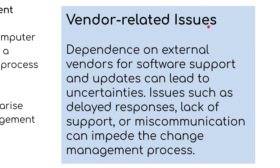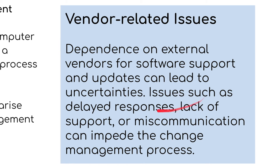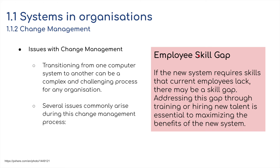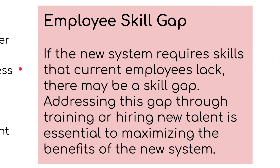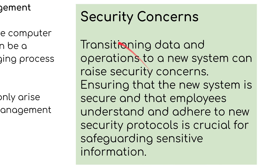Vendor-related issues are another concern — sometimes we depend on external vendors for software support and updates, which can lead to uncertainties. Issues such as delayed responses, lack of support, or miscommunication can impede the change management process. There may also be an employee skill gap: if the new system requires skills that current employees lack, addressing this through training or hiring new talent is essential to maximize benefits. People don't want to fear losing their jobs because they lack current skills. Security concerns also arise — transitioning data and operations to a new system can raise security issues, and ensuring the new system is secure and that employees adhere to new security protocols is crucial for safeguarding sensitive information.